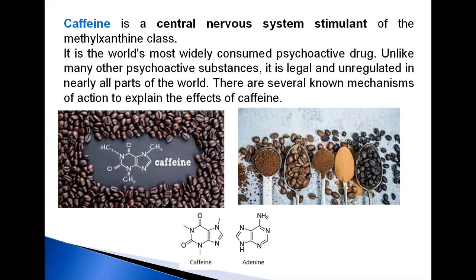Caffeine is a central nervous system stimulant of the methylxanthine class. It is the world's most widely consumed psychoactive drug. Unlike many other psychoactive substances, it is legal and unregulated in nearly all parts of the world. Caffeine is a bitter, white crystalline purine and is chemically related to the adenine and guanine bases of DNA and RNA.